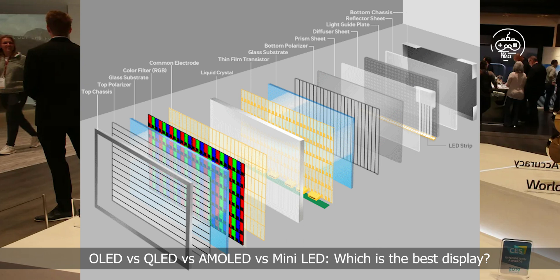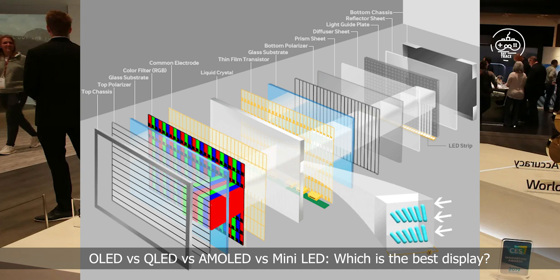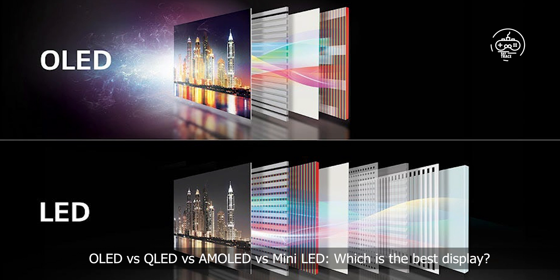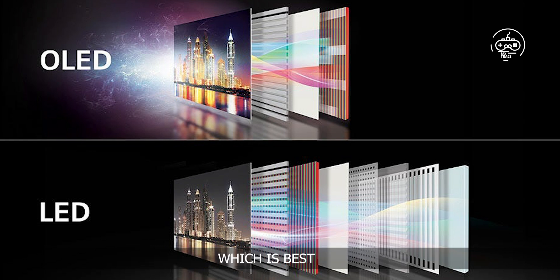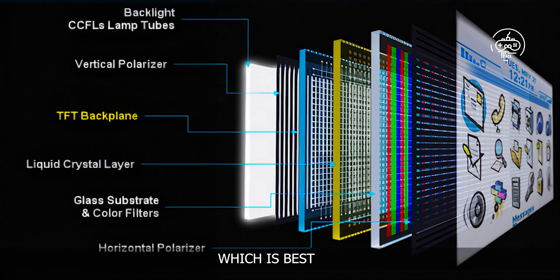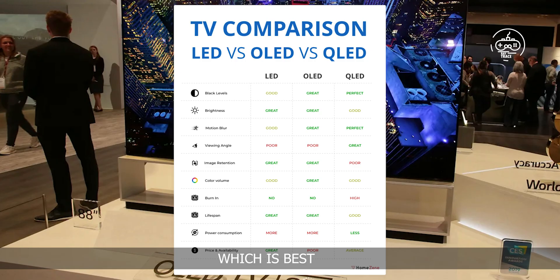However, you'll occasionally also hear about QLED, AMOLED, and Mini-LED too. This might make you wonder what the difference is between OLED vs. QLED vs. AMOLED vs. Mini-LED, and which is best. I'm here to explain at a high level what the differences are and what they mean for you, as well as which ones are the best in various scenarios.